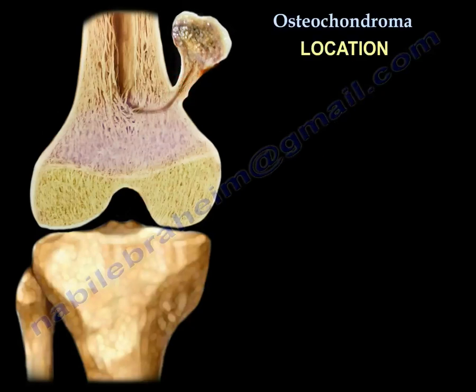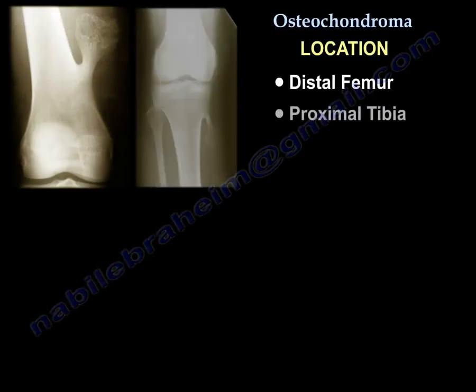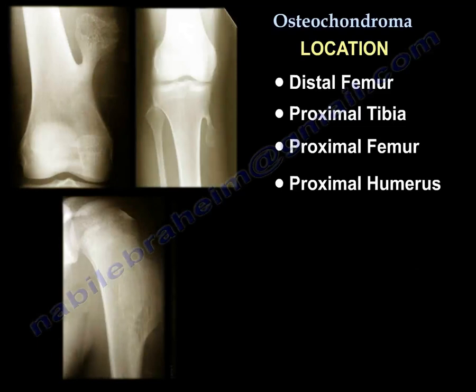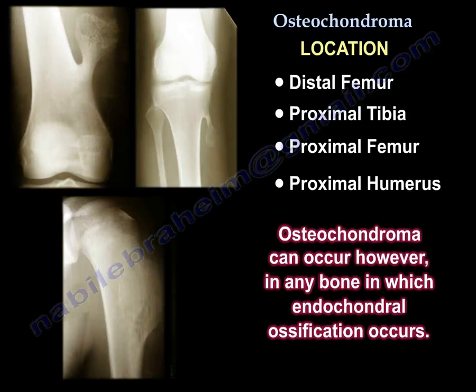Location: distal femur, proximal tibia, proximal femur, and proximal humerus. But it can occur in any bone in which endochondral ossification occurs, such as the metaphysis.